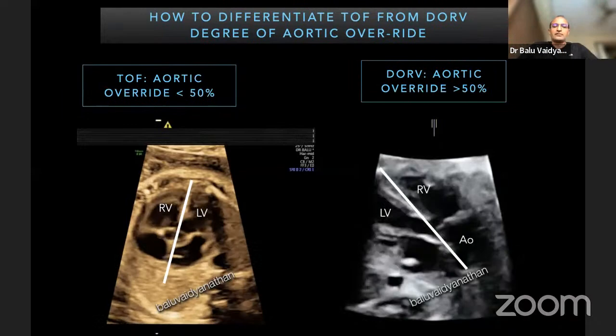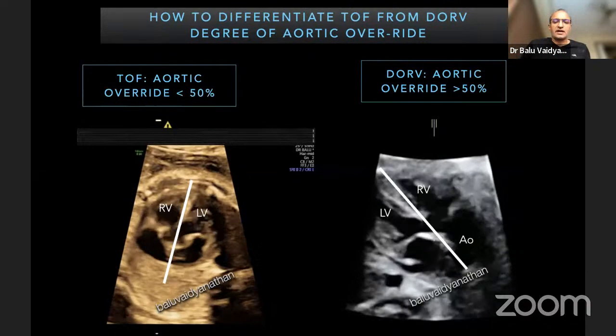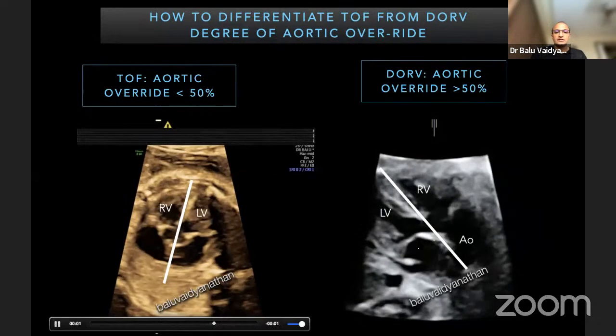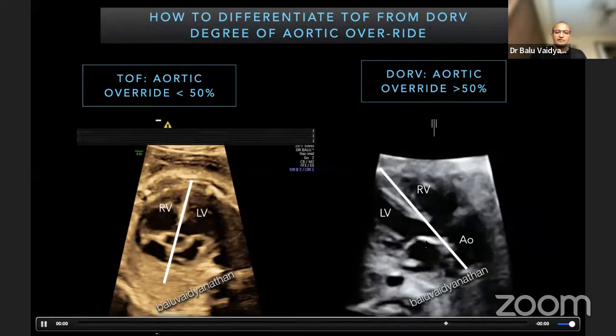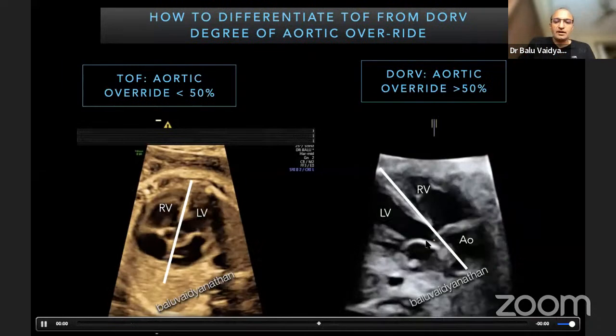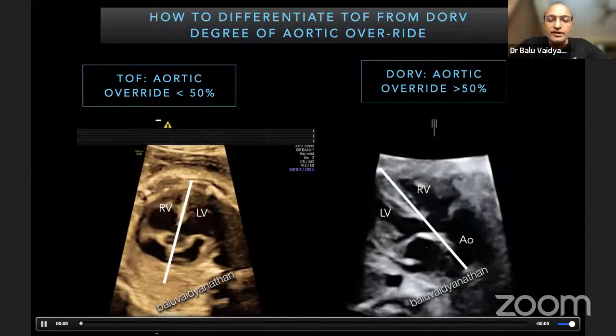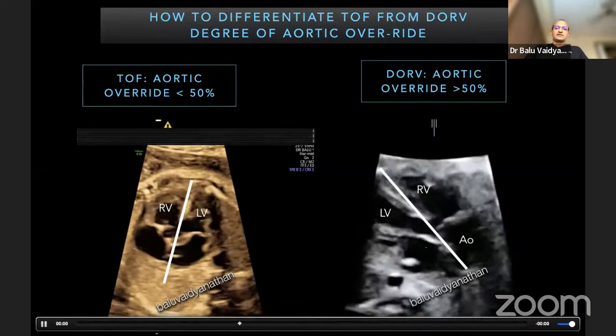How do you separate TOF from DORV? It's this 50% overriding. In tetralogy, typically the overriding is such that the aorta is equally committed to both the RV and the LV. However, in DORV, the aorta is more committed to the right ventricle than to the left ventricle — that is more than 50% overriding. Another method: in normal, the aortic valve and the mitral valve are continuous, while in DORV, the aortic valve and the mitral valve are discontinuous — there is a white fibrous bundle separating them. That is called aorto-mitral discontinuity in DORV. If you truly want to define DORV: aorto-mitral discontinuity and more than 50% overriding.